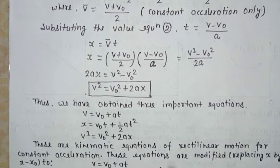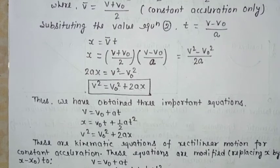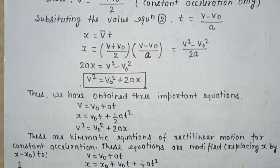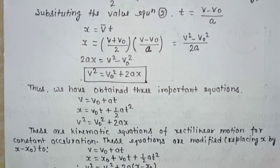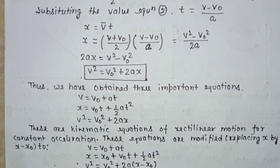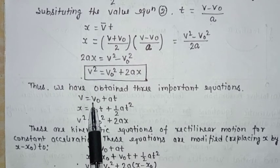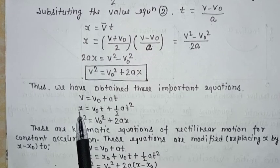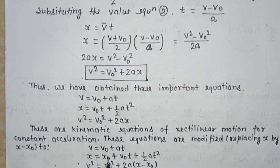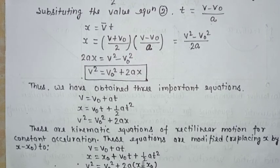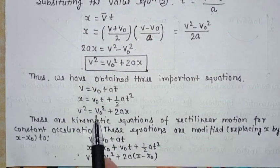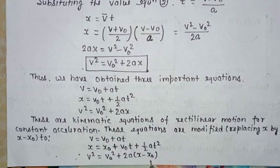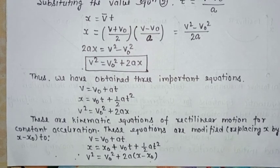These are the kinematic equations for rectilinear motion under constant acceleration. We can also modify these equations by replacing X with (X − X₀), where X₀ is the initial position and X is the final position. The modified equations become: V = V₀ + at; X = X₀ + V₀t + ½at²; V² = V₀² + 2a(X − X₀). That's all for today. Thank you.